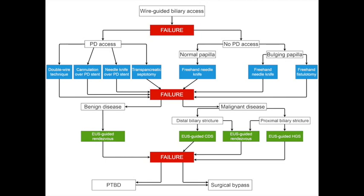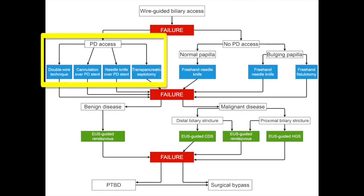The choice of advanced cannulation technique depends on whether pancreatic duct access has been achieved. If pancreatic duct access has been achieved, the possible options are: 1. Double wire technique, 2. Cannulation over a pancreatic stent, 3. Needle knife sphincterotomy over a pancreatic stent, and 4. Transpancreatic papillary septotomy.